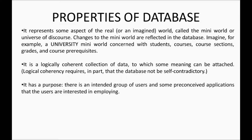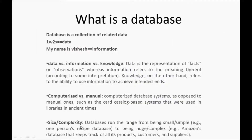Database sizes can vary — a database can be small, medium, or large. For example, a person's phone number database stored on a computer is a small personal database. But Amazon maintains a database that keeps track of all products and customers, so the size of the Amazon database is huge. Size can vary from small to large, and databases can be computerized or manual.